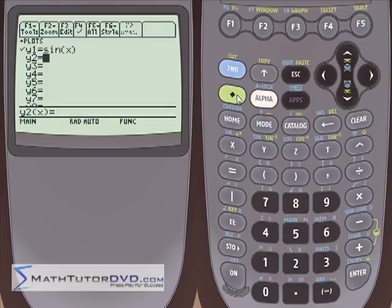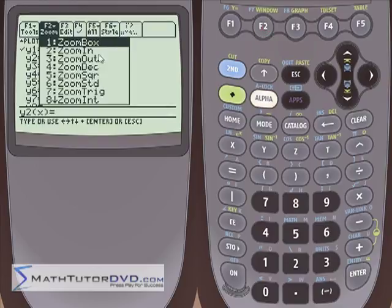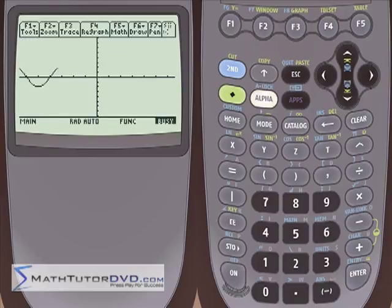To make it look better, let's select zoom trig number seven and watch it plot the sine function. Notice the sine goes up and down repeatedly. We have lots of peaks and valleys, and it happens over and over again.